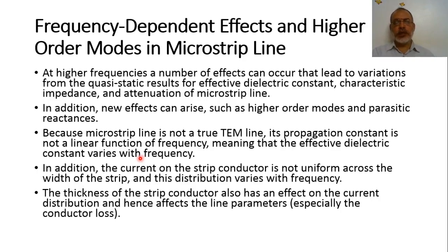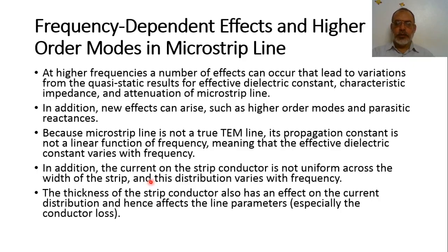Another important point is that in the quasi-static solution, it was assumed that the current distribution along the strip is constant. In the actual case, it is not constant. The current distribution along the strip conductor is not uniform across the width of the strip and its distribution varies with frequency. The more appropriate distribution looks like the letter U — concentrated at the edges of the strip and nearly zero at the center. The thickness of the strip conductor also has an effect on the current distribution, and hence on the line parameters, especially the conductor loss.